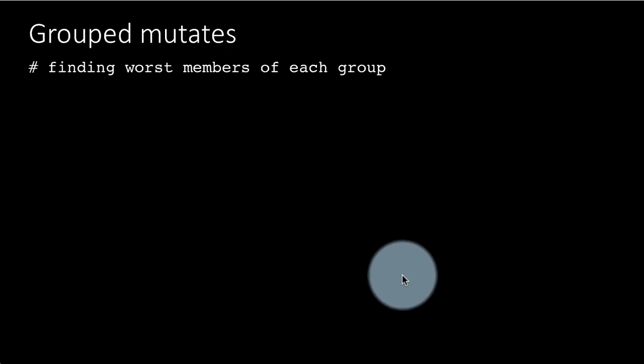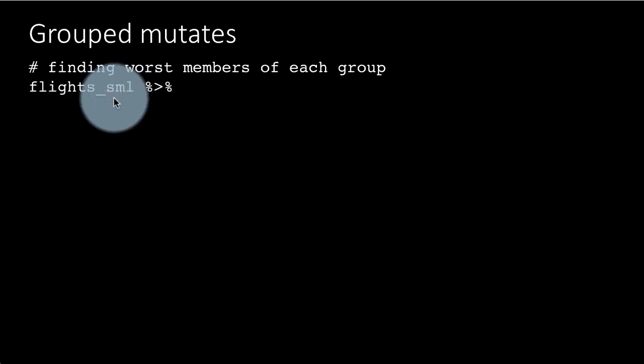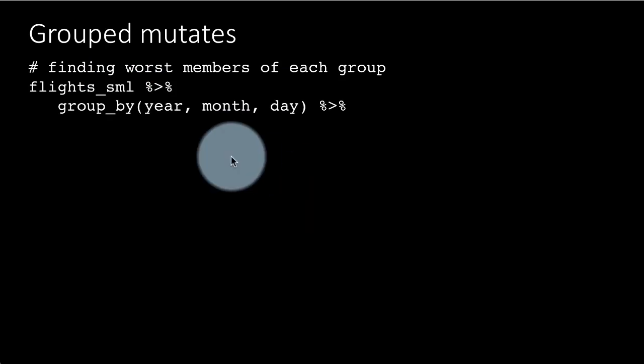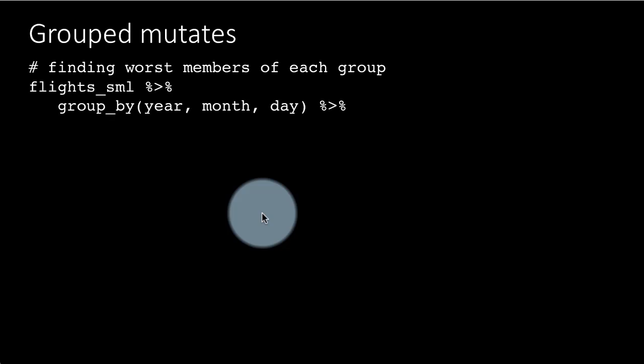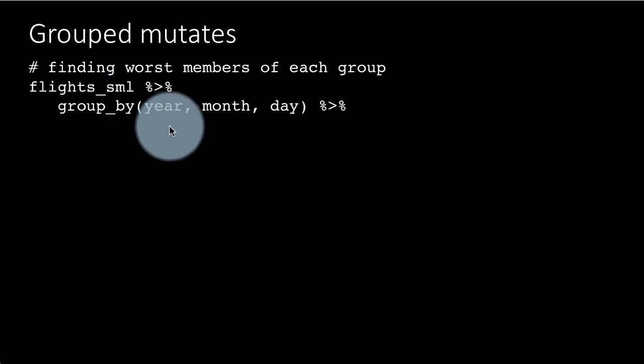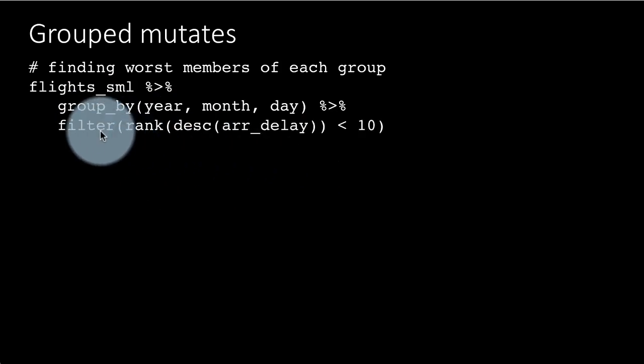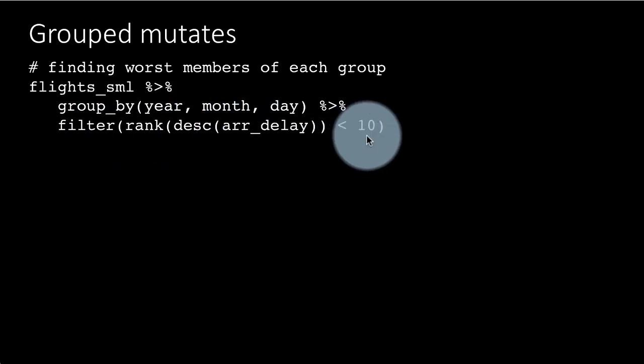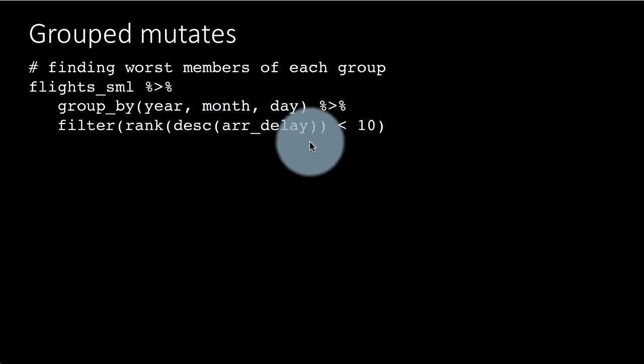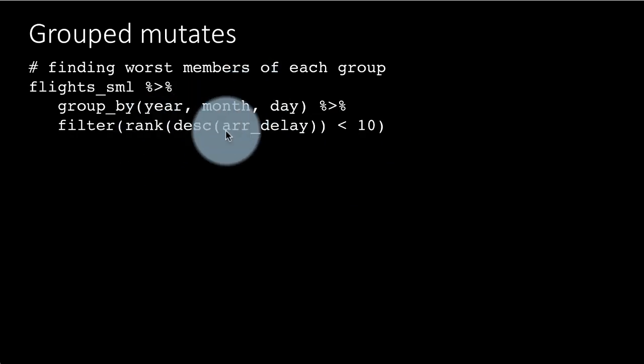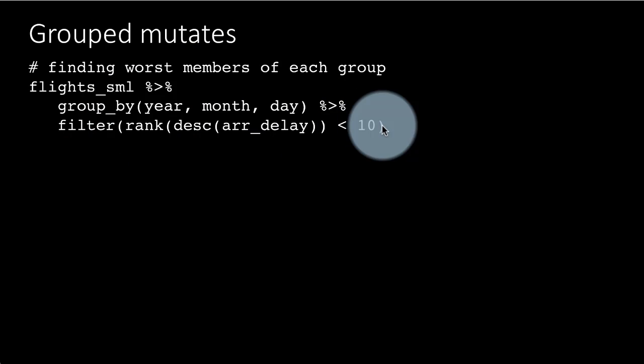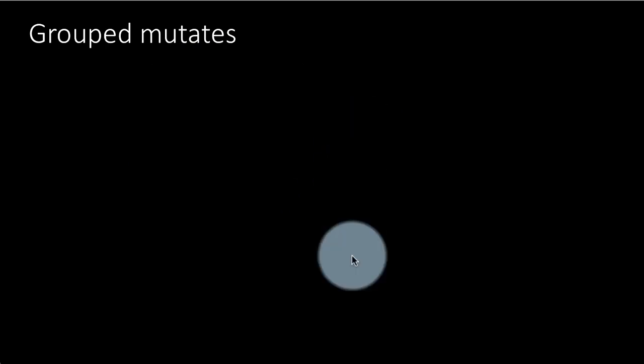Now, there is also something called grouped mutates, finding the worst members of each group. So we are creating this data frame called flights_small. I didn't create flights_small earlier. I'll include that. Flights_small is basically a data frame with fewer columns. That's all it is. So group_by year, month, day, and then here we are saying filter rank of descending order of arrival_delay is less than 10. So we arrange it first in descending order of arrival_delay, and then we say take only those which have a rank of less than 10. So rank is one of the functions too, which we have not discussed earlier. And since it is in descending order, obviously the high delays will be up front. So the worst members are going to be those with ranks 1 to 10, or 1 to 9 in this particular case.